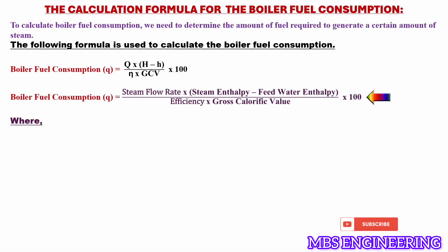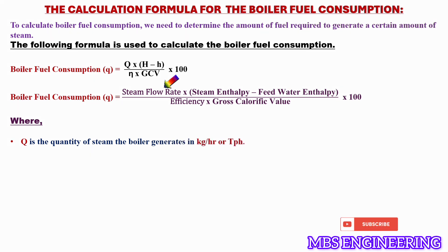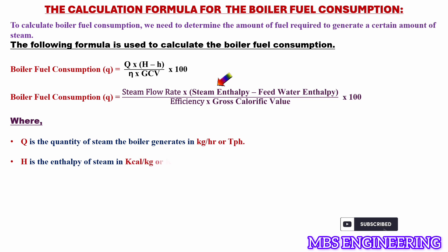Where Q is the quantity of steam the boiler generates in kilogram per hour or tonnage per hour. Capital H is the enthalpy of steam in kilocalorie per kilogram or kilojoule per kilogram.